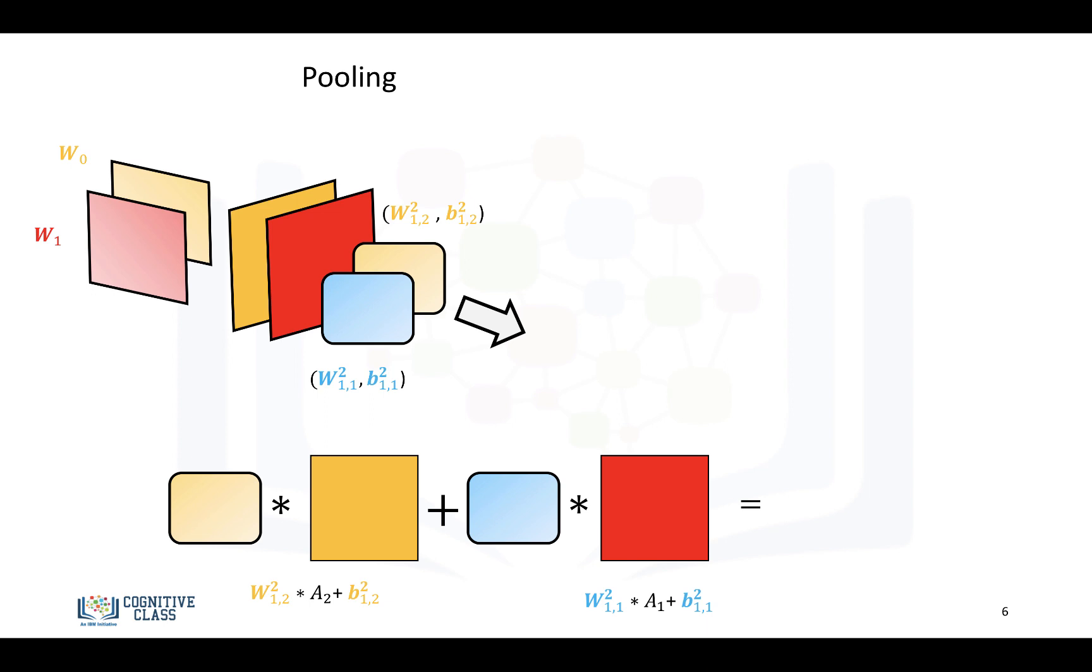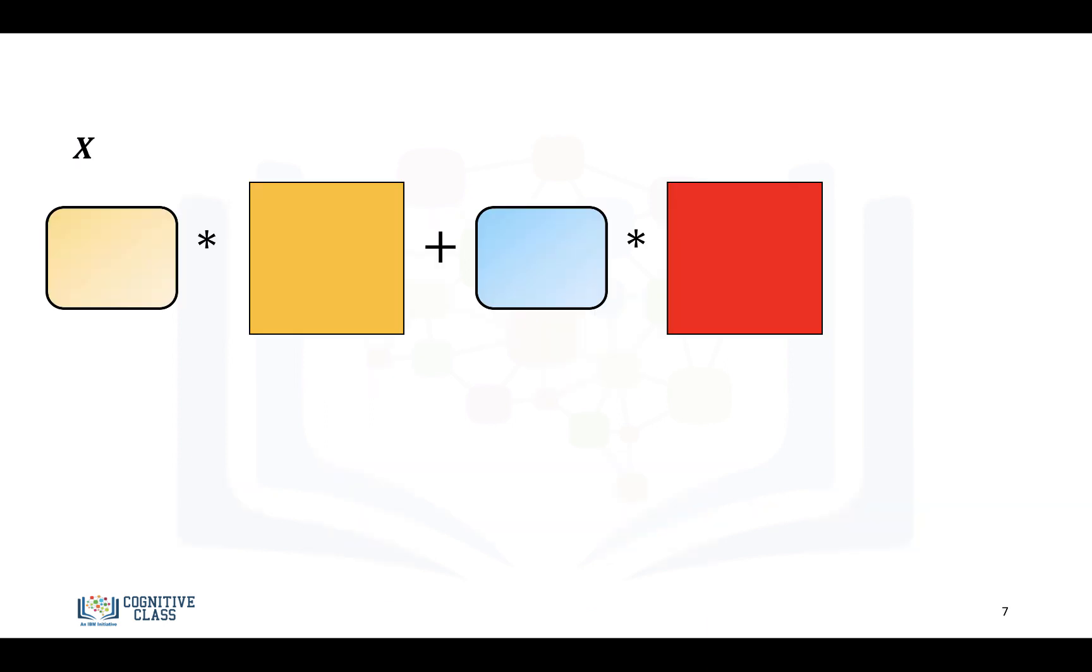We'll convolve the kernel with its corresponding input, and add the results together. And we'll get something like that. And let's just clarify it in an independent step.